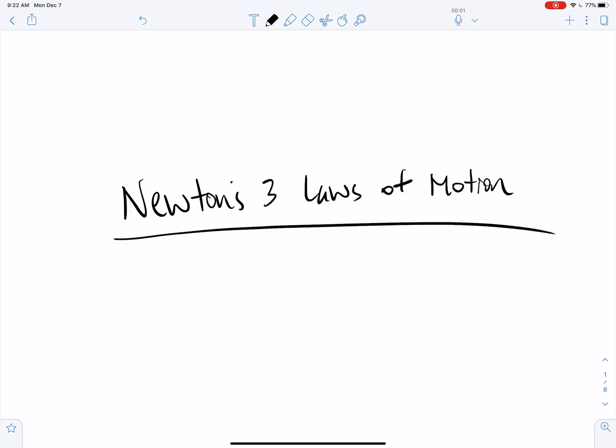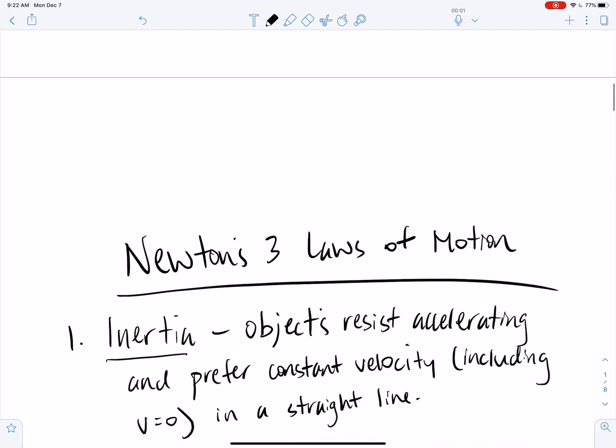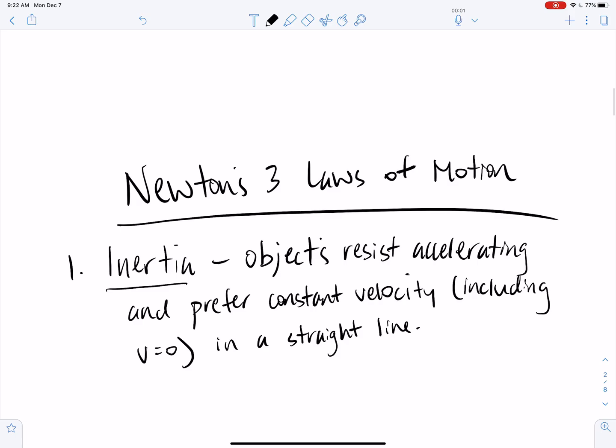So Newton's first law of motion is the law of inertia. And inertia basically states that objects resist accelerating and they prefer to move at constant velocity, including rest, which would be a velocity of zero. And when they are moving at a non-zero constant velocity, they will move in a straight line. Okay, that's the law of inertia.